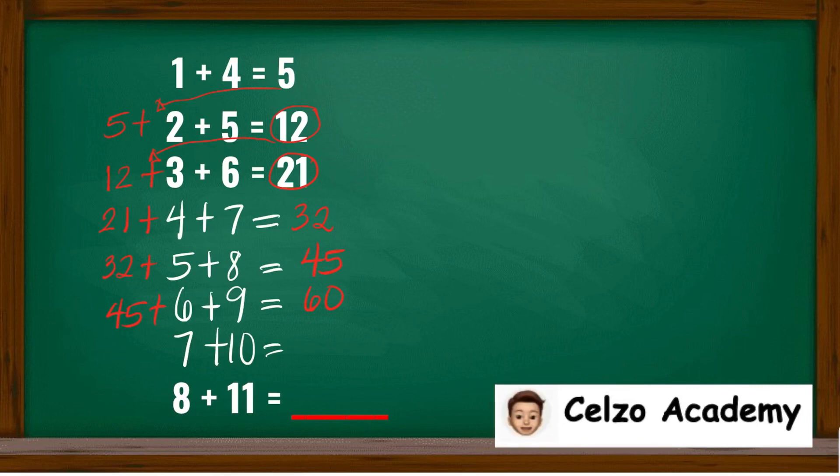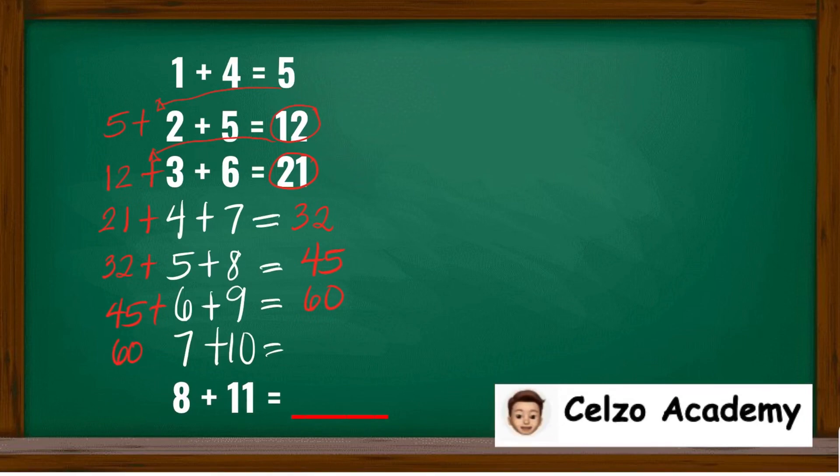For 7 plus 10, we need to add the previous answer, 60. So the answer is 77.